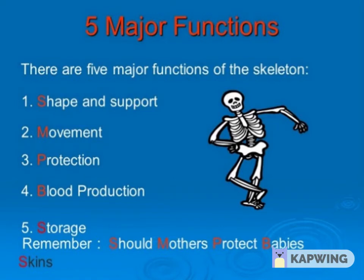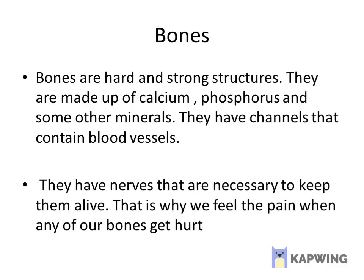Now, the skeleton system consists of 206 bones — but what are bones? Bones are hard and strong structures. They are made up of mainly calcium, phosphorus, and some minerals. They have channels that contain blood vessels, and they have nerves that are necessary to keep them alive. An important point: bones are living entities — they are not non-living. That is why we feel pain when any of our bones get hurt.